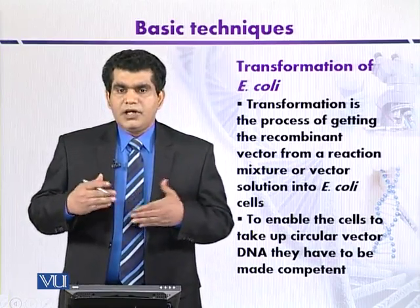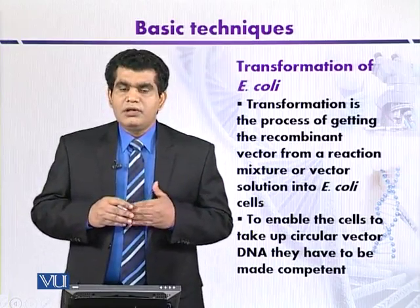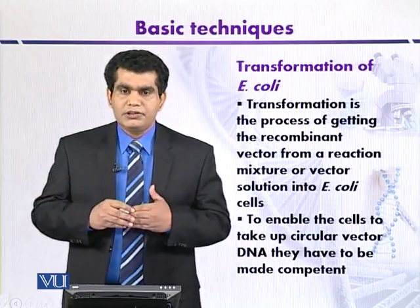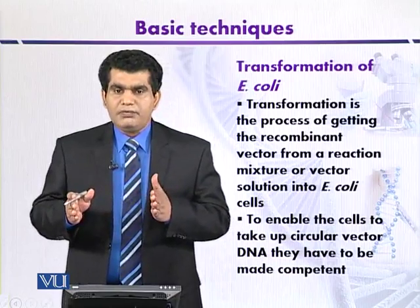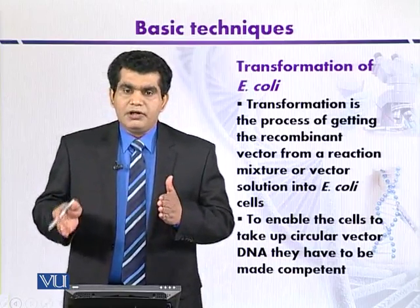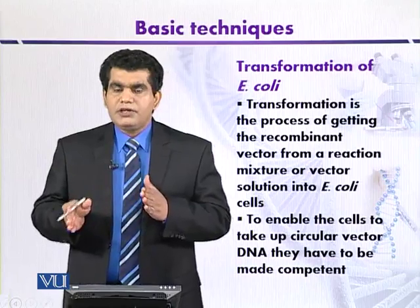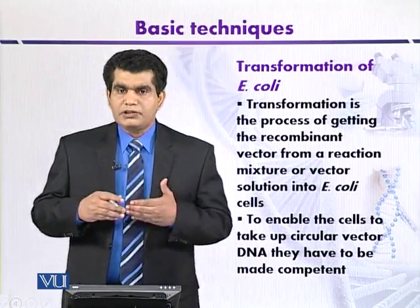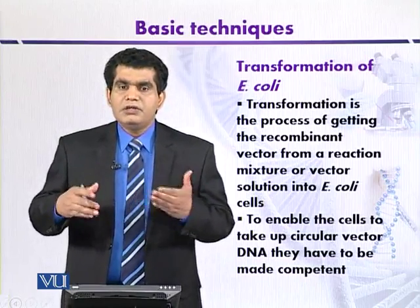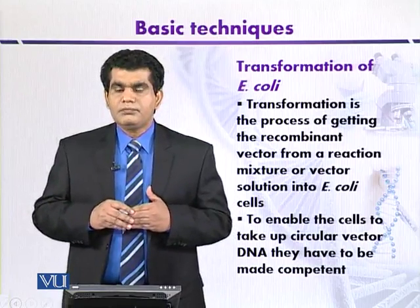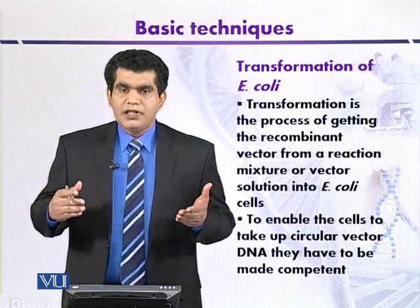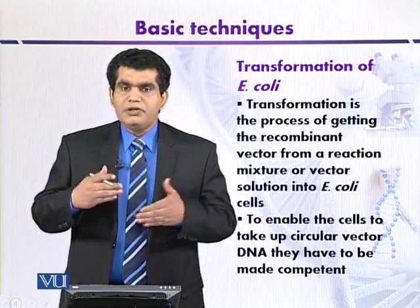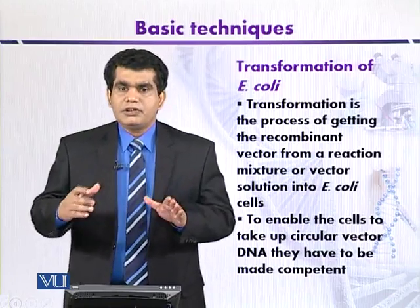Then in 1970, a few workers were able to transform E. coli in the presence of calcium chloride, and they transformed it with the help of bacteriophage lambda DNA. After a few years, in 1972, Cohen and his colleagues were able to transform E. coli even with plasmid DNA. Plasmid DNA is the extra-chromosomal material of bacteria that can be used as a vector to insert foreign DNA.